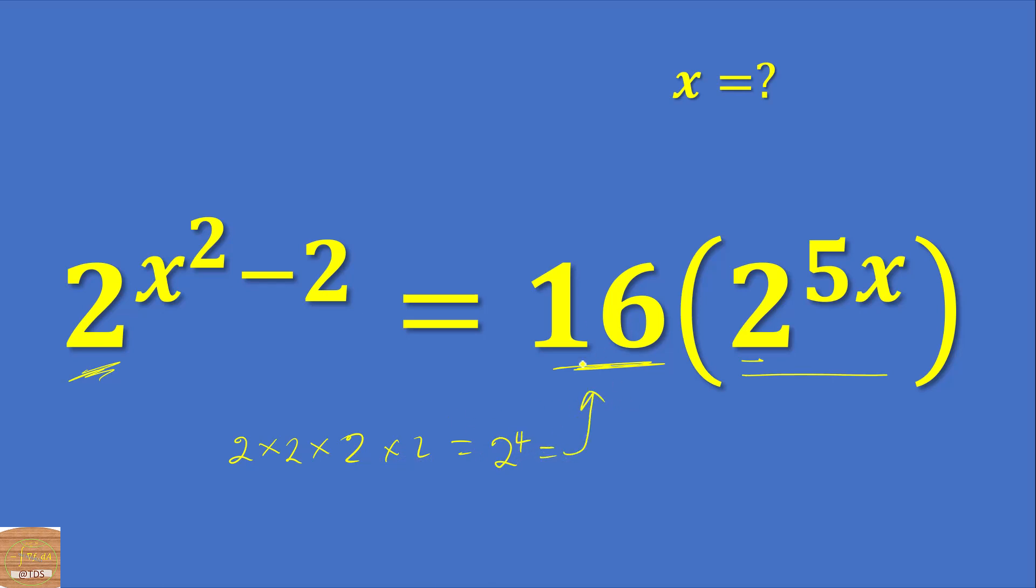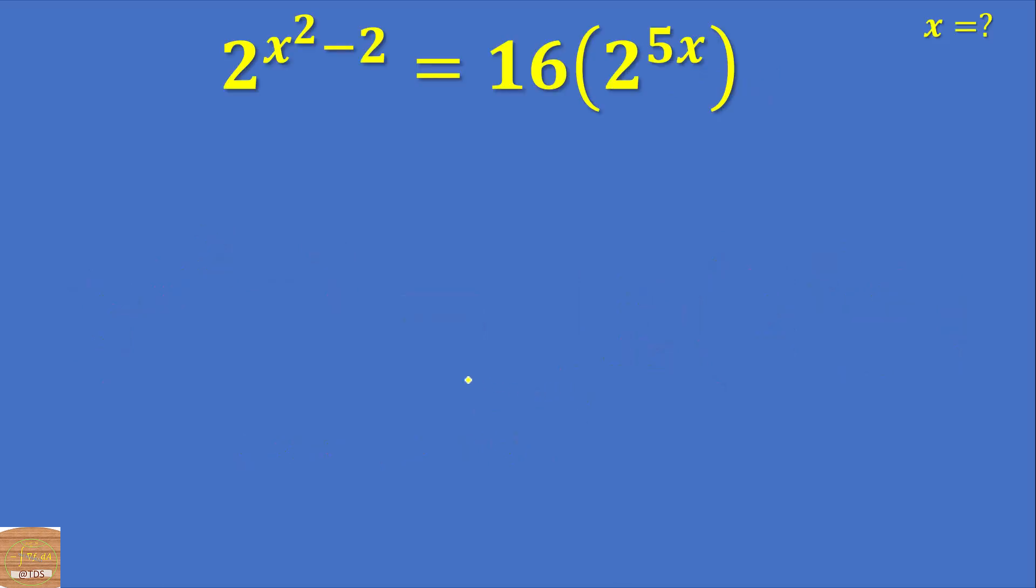We need to take this 16 here, so let's do that by making this 2 to the power 4. So this one will be 2 to the power x squared minus 2, so we have 2 to the power 4 times the power 5x.